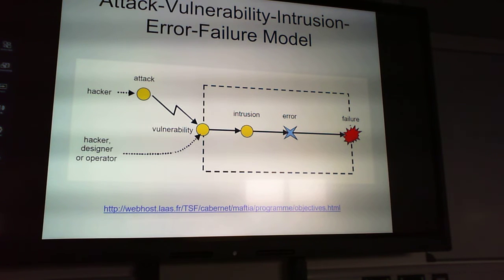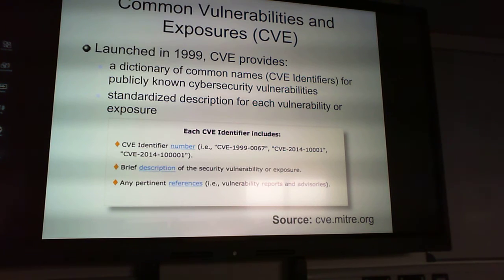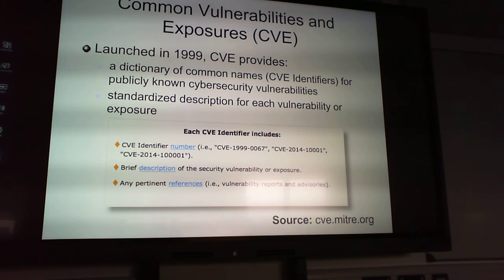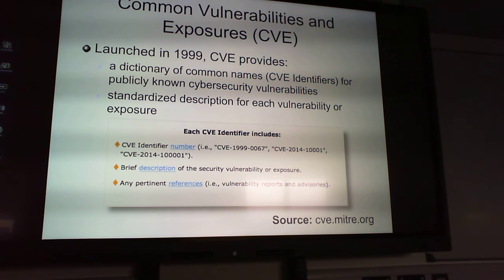The attack-vulnerability-intrusion-error-failure model: the hacker launches an attack, exploits the vulnerability, detection finds an error, and then the attack fails. CVE — Common Vulnerabilities and Exposures — is a dictionary of common names for publicly known cybersecurity vulnerabilities. If you do pen testing you'll read about CVEs constantly. A standardized description exists for each vulnerability or exposure.